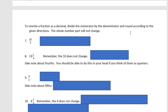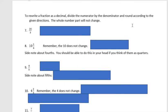In the second half, I'm looking at rewriting fractions into decimals. And to do that, you just divide the numerator by the denominator and round according to the given directions. Our directions are to round to the hundredths, so that's what I'm going to be doing. The whole number part will not change. And for me, I would just recommend you use your calculator to do that division.